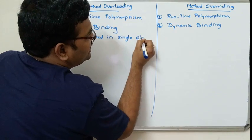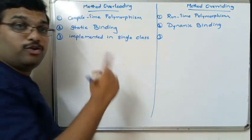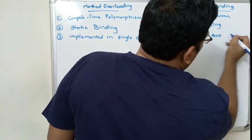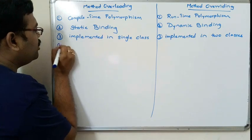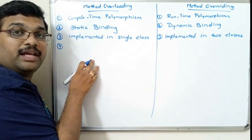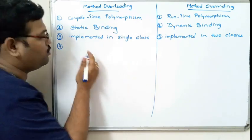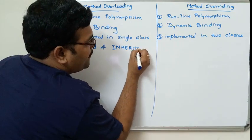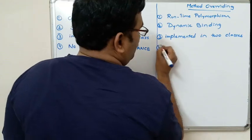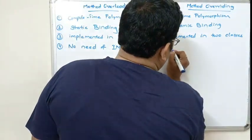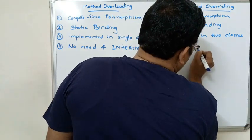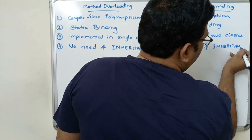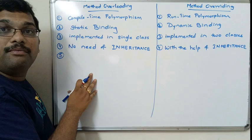Method overloading is implemented in a single class, whereas method overriding is implemented in two different classes. For method overloading there is no need of the inheritance concept, but method overriding is achieved with the help of inheritance.